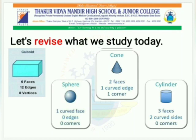Okay children, let's revise what we studied today. First, a cuboid has 6 faces, 12 edges, and 8 vertices. A sphere has one curved face, zero edges, and zero corners. A cone has two faces, one curved edge, and one corner. A cylinder has three faces, two curved edges, and zero corners.